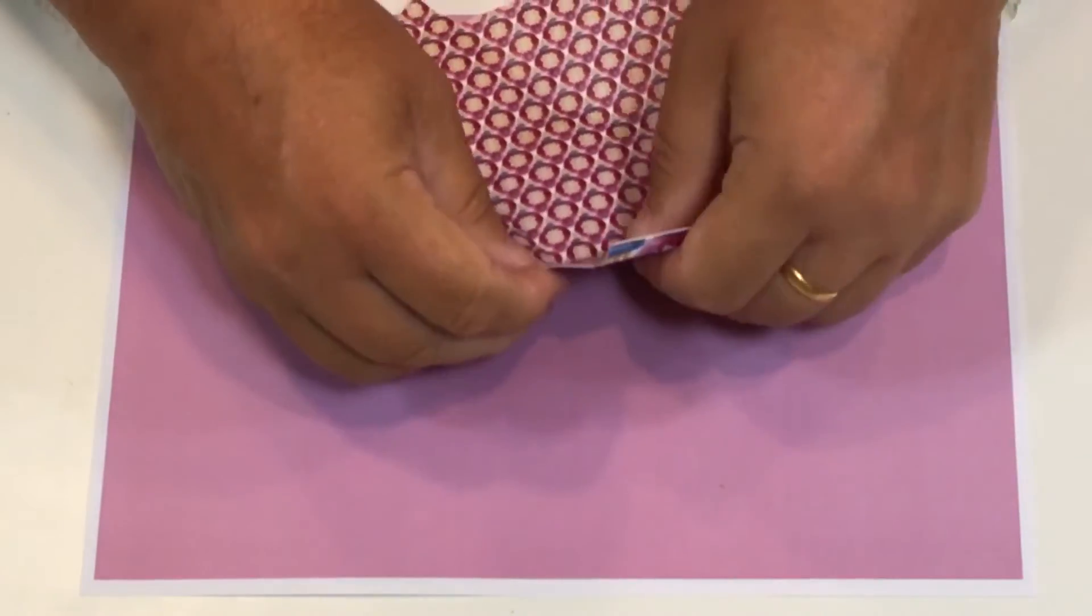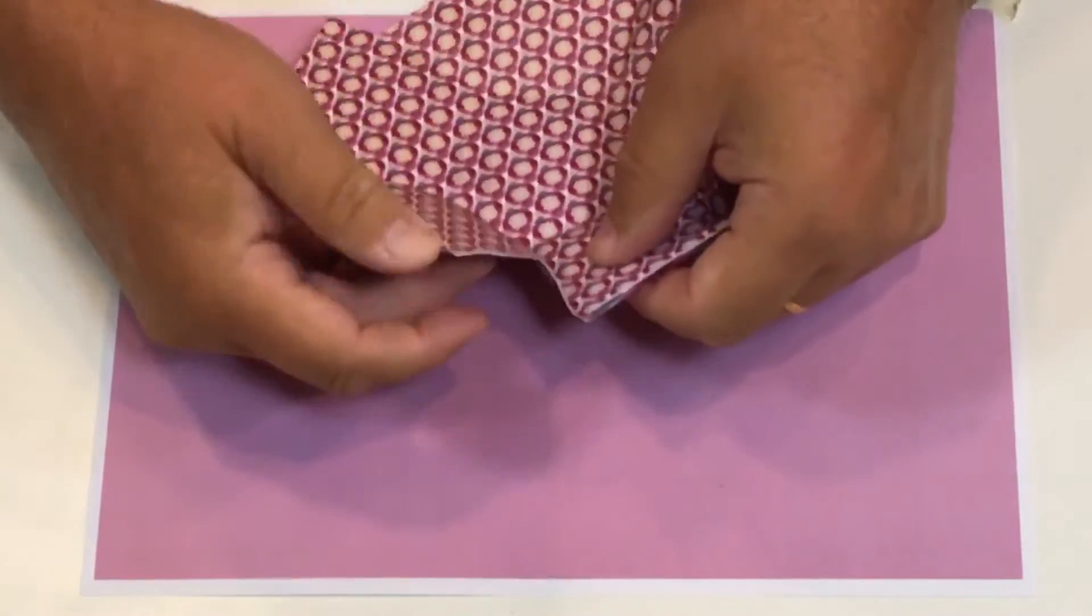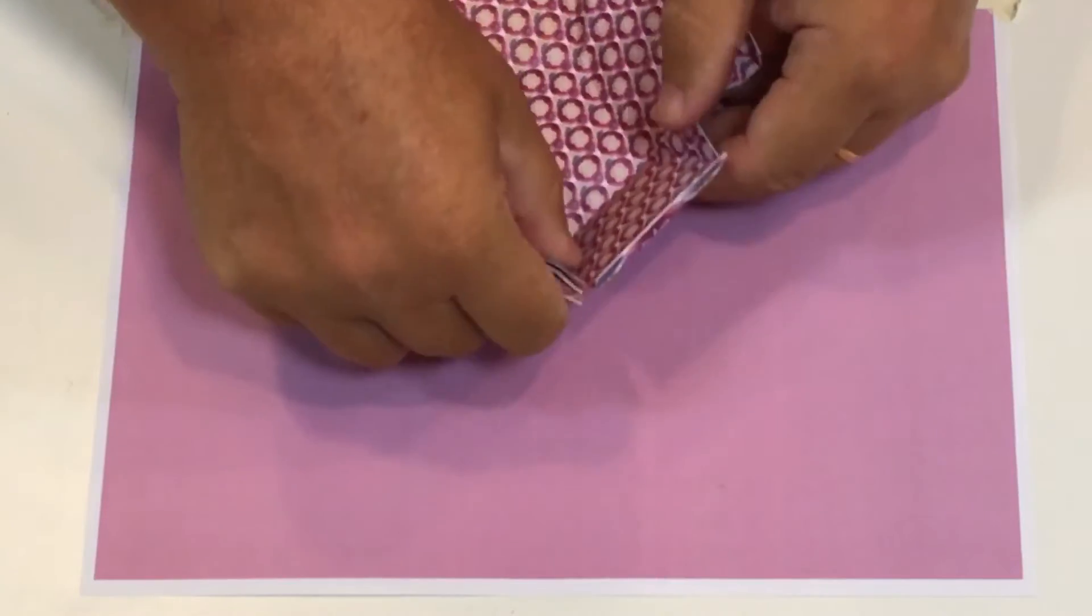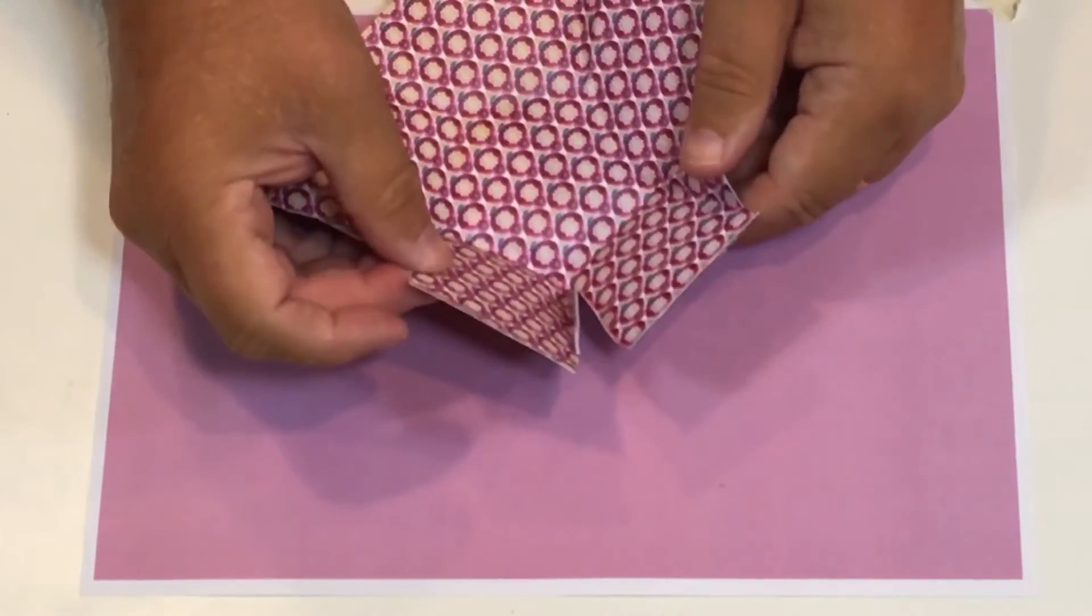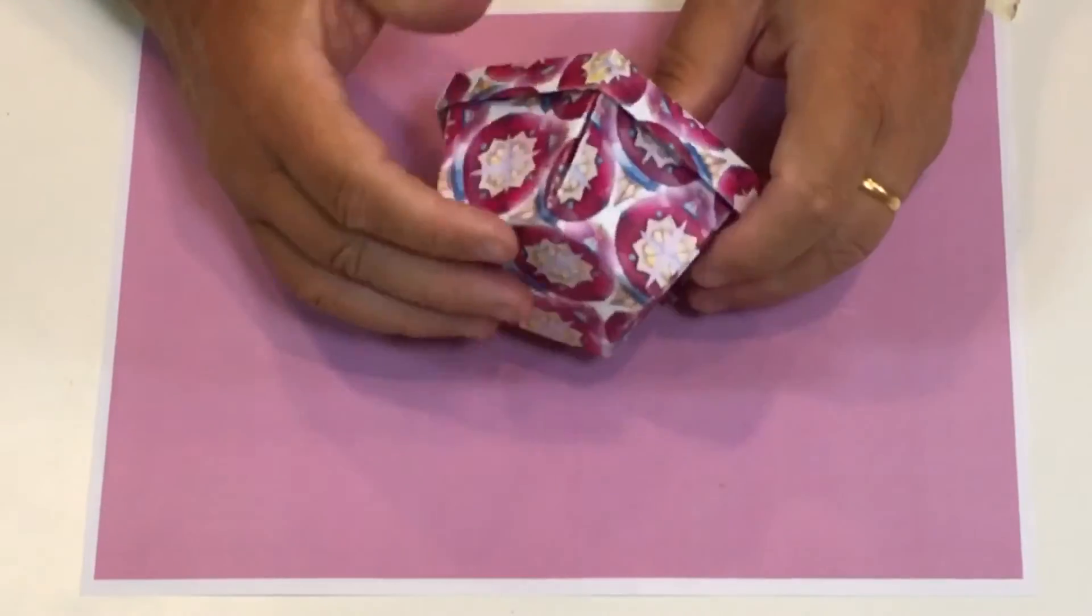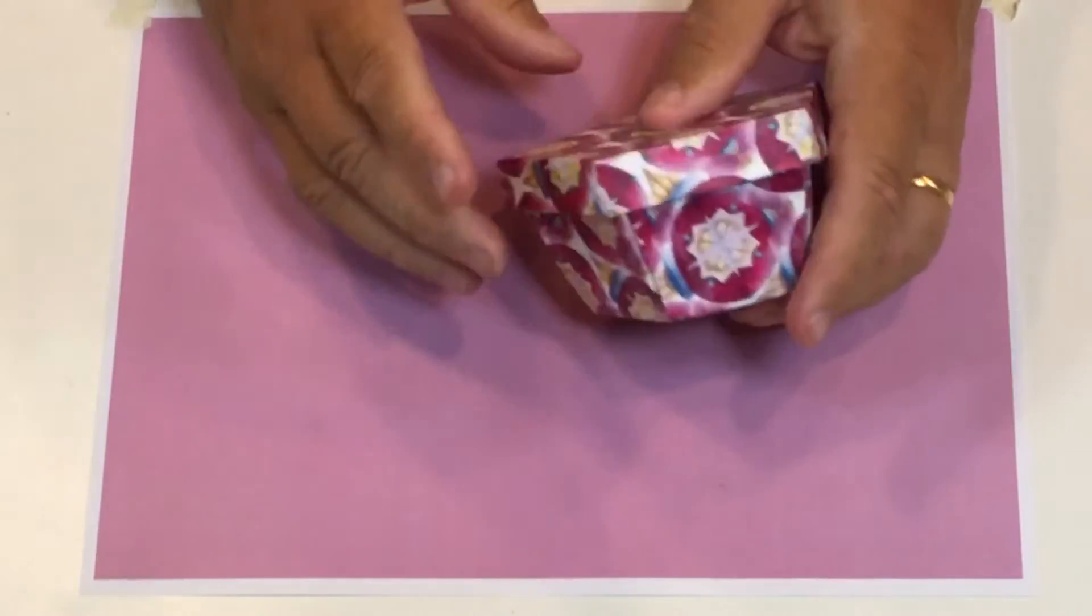So you do that all the way around. You've creased them already, now you just need to make sure—it's a little bit fiddly but you're folding those over so you get that little flap there as you can see. Now as you can see I've folded all those base corners in, just press them in like that.